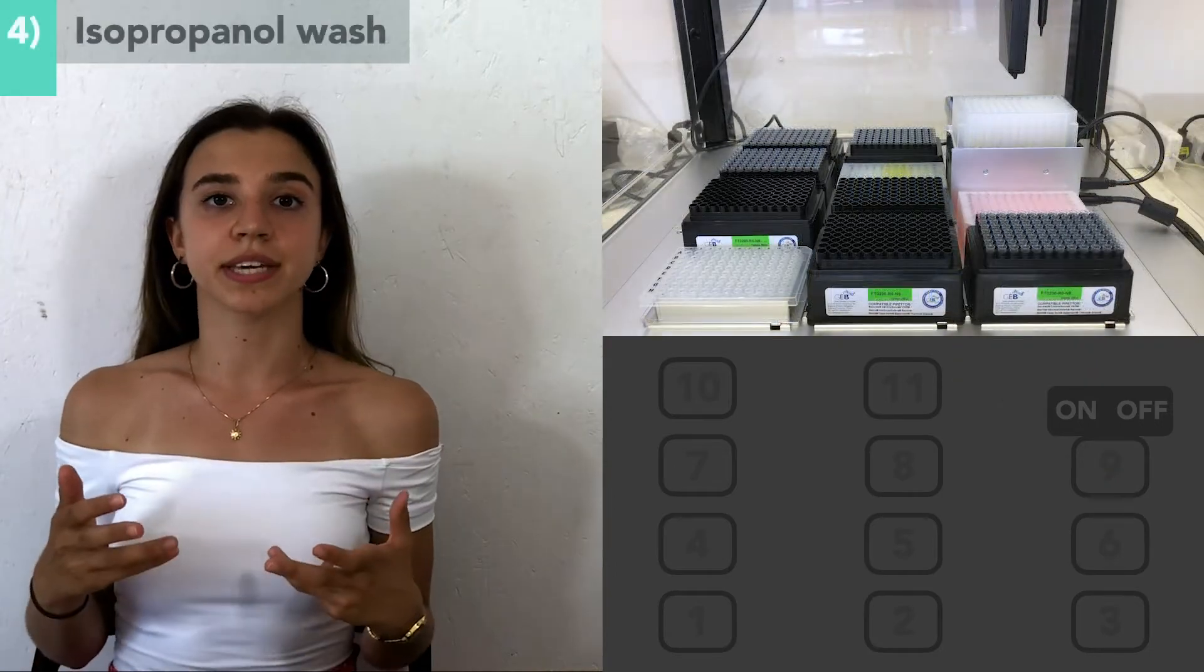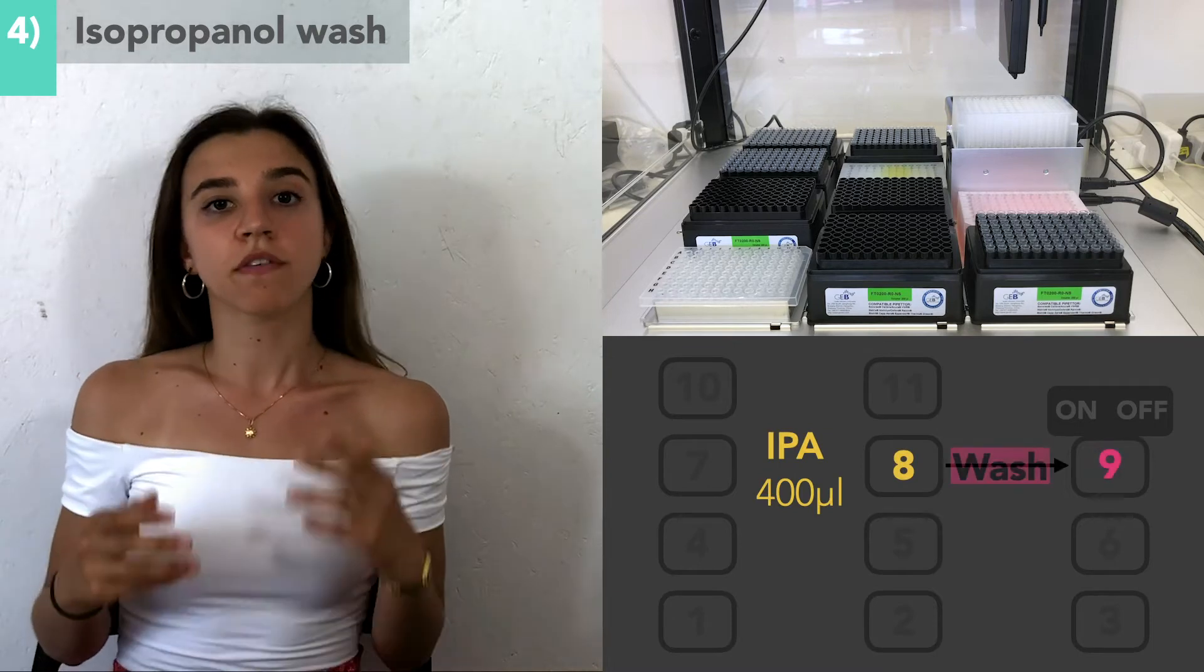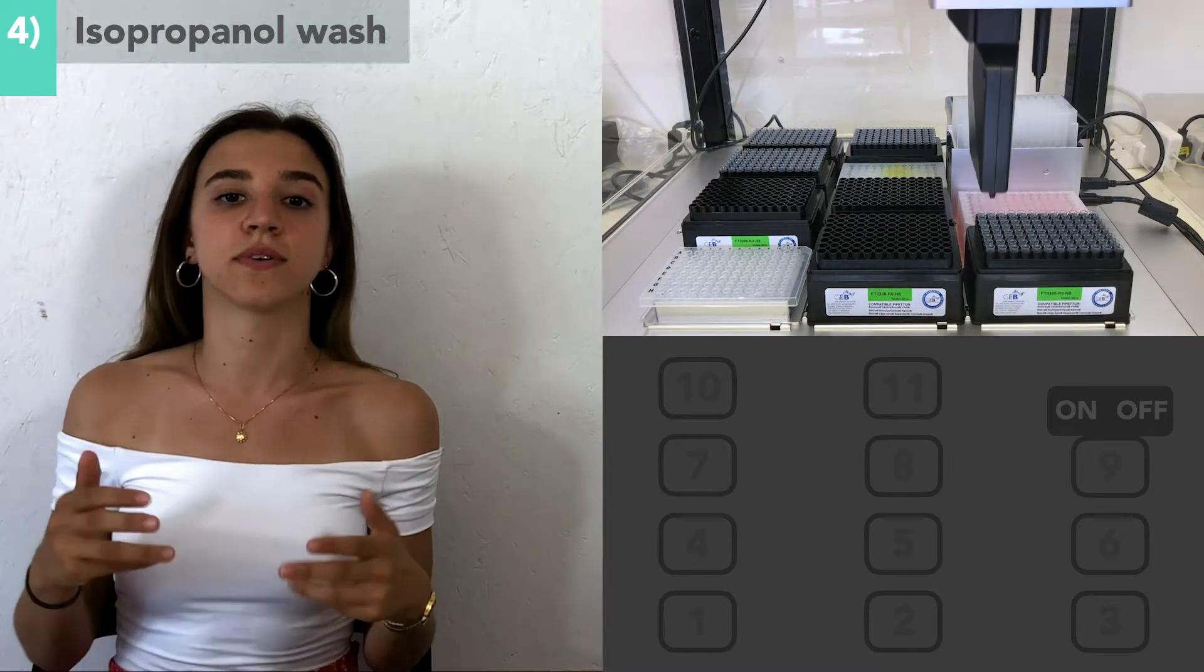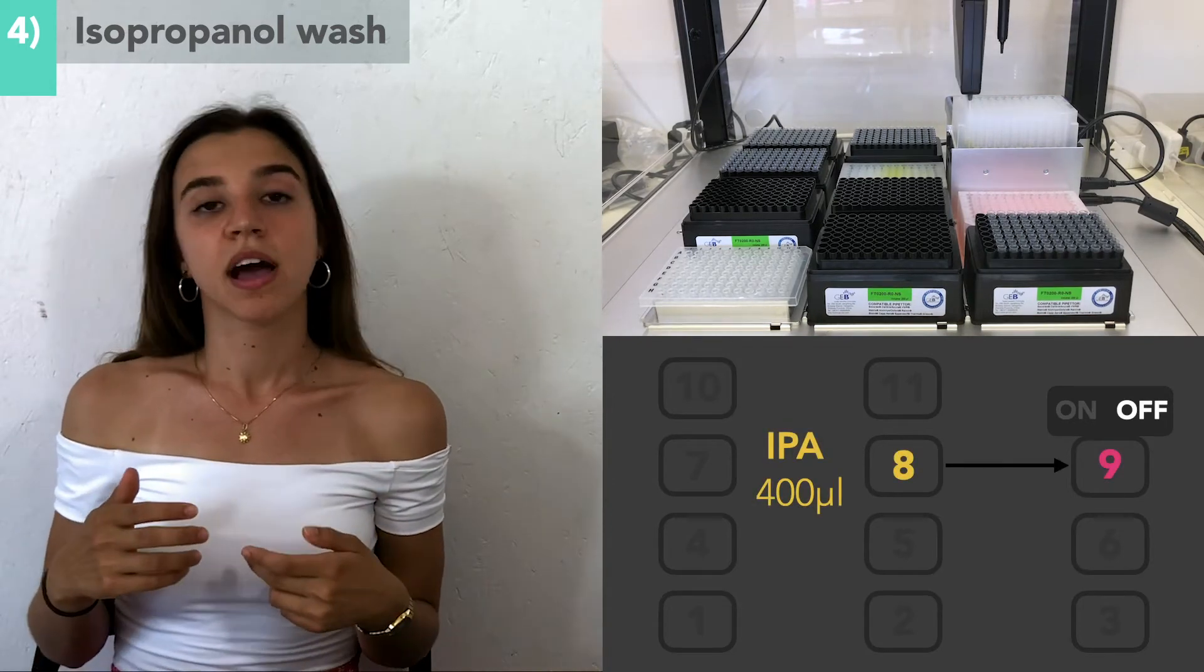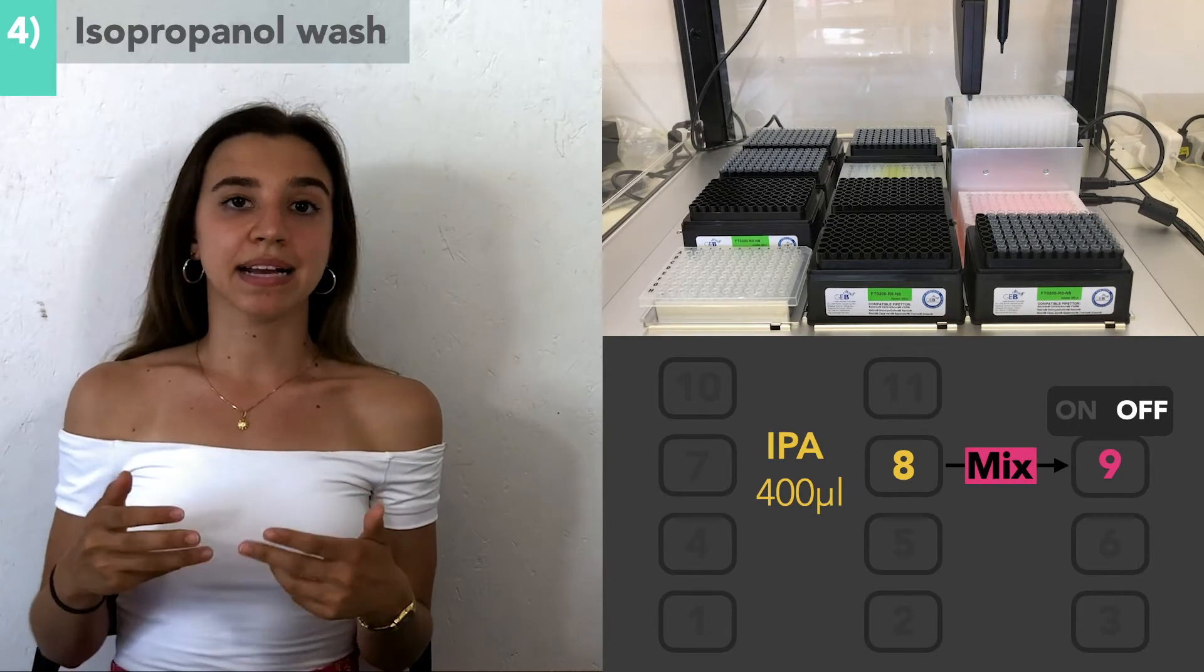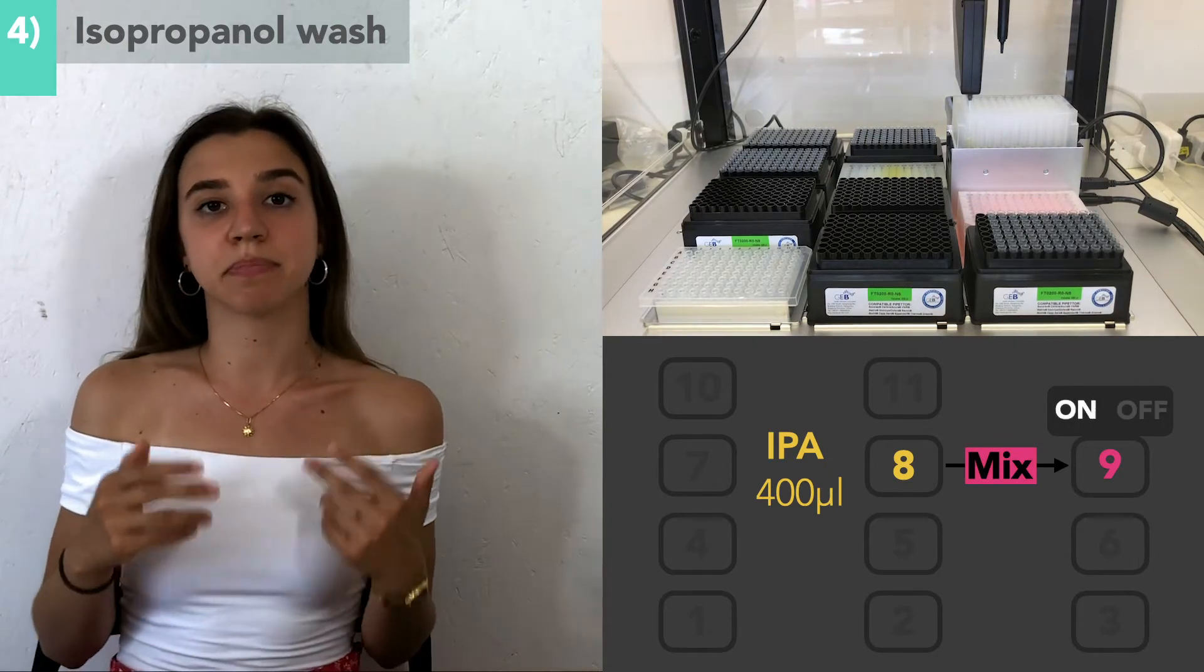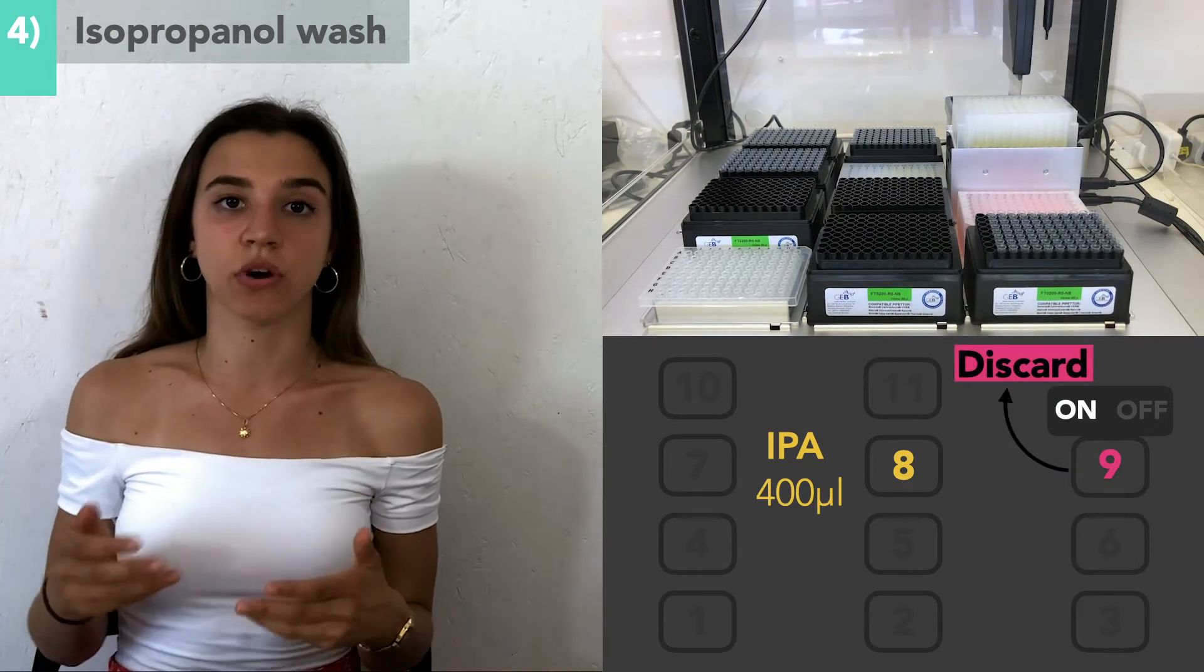The first washing stage is done with 400 microliters of isopropanol. For each wash, the process is as follows: the magnet is turned off, isopropanol is then added, the solution is mixed by pipetting up and down, the magnet is then turned on to attract the beads to one side of the well, and then the supernatant is discarded.